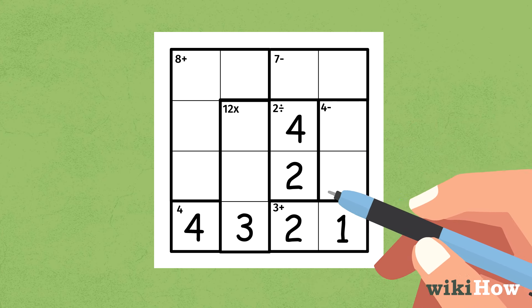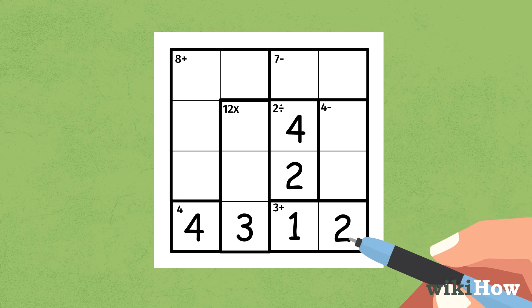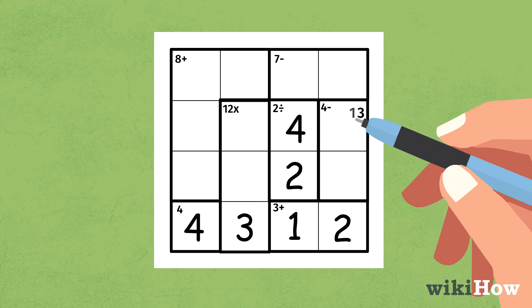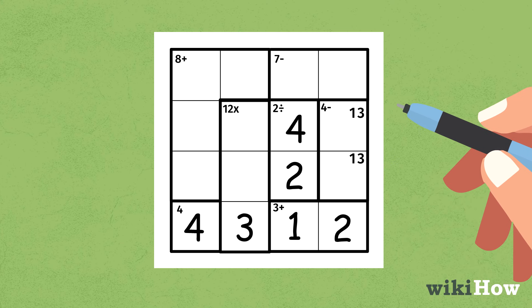Don't worry if you don't get it right away. KenKens take practice to start to find patterns. You can write smaller numbers in the upper right corner of the box to take notes of potential answers, crossing them off as they are eliminated.